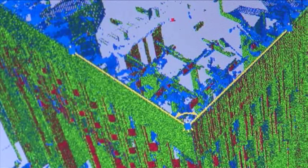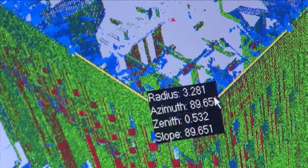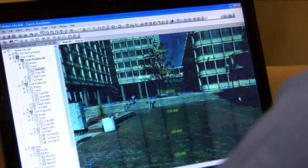ScanMaster can also quickly annotate desired information, such as points, lines, angles, and distances, and texture map scanned data for photorealistic visualizations.